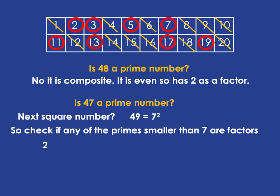We check the prime numbers smaller than 7. Does 2 divide into 47? No, because 47 is not even. What about 3? If you try dividing 3 into 47, you get a remainder, so 3 doesn't divide in. The next prime is 5 — any multiple of 5 ends in 5 or 0, so it doesn't divide in either. We've checked all primes smaller than 7, and none divide into 47, so 47 is prime.